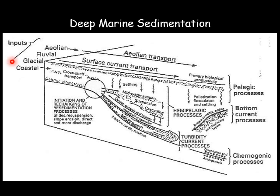Sediment inputs from the terrestrial and shallow marine environments, driven by processes such as fluvial, glacial, and aeolian, are transported across the shelf. Surface current transport is the main conveyor of sediments to deeper oceans. Other sediments are transported sub-areally by wind currents such as aeolian transport and volcanic ash from volcanoes. The edge of a continental margin or the upper part of the slope is a site for initiation and recharging of sedimentation processes.